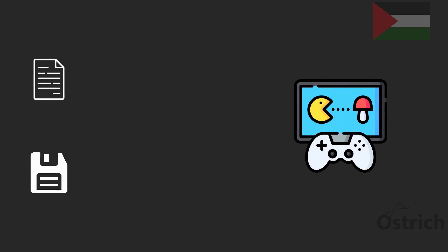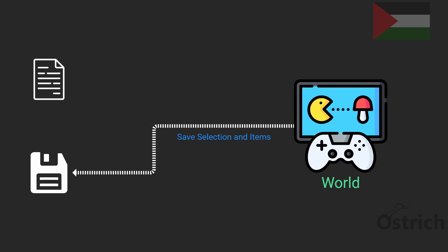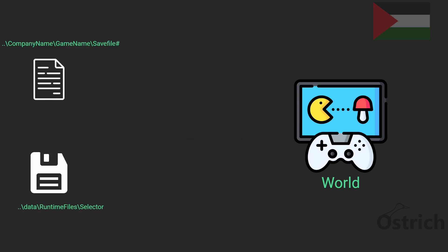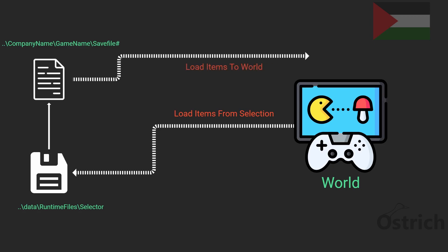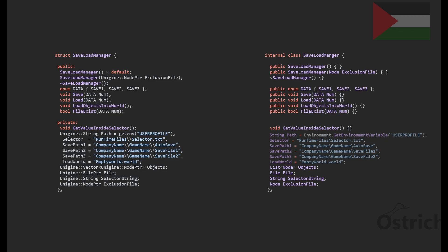The first thing is we're going to have a world where we're playing a game or moving around. Once we're done and want to save our state, we select and save our items into a save file using a selector that chooses which save file number to use. For loading, we go into the selector to check the specific save file, then load the items from that save file into the world.